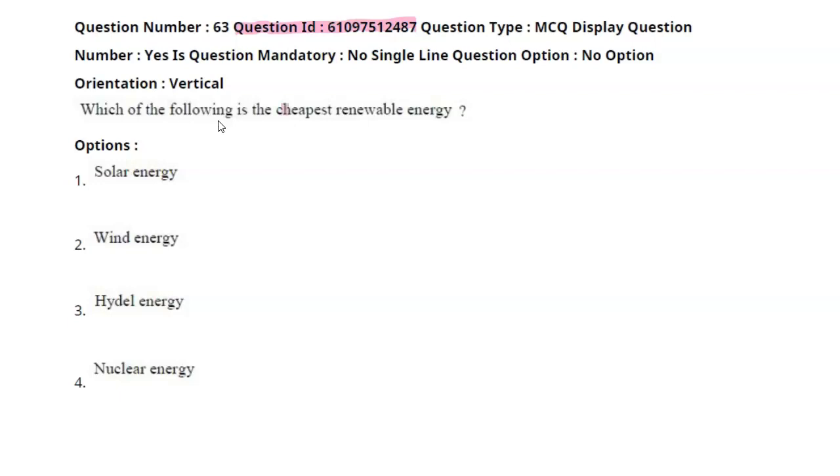Which of the following is the cheapest renewable energy? So out of here, solar energy and wind energy and hydro energy, nuclear energy, hydro energy is the cheapest renewable energy.